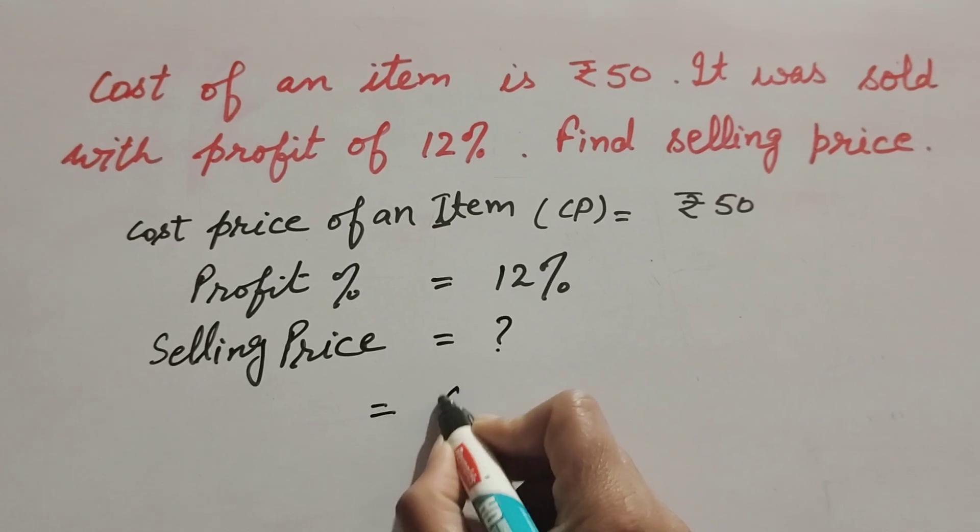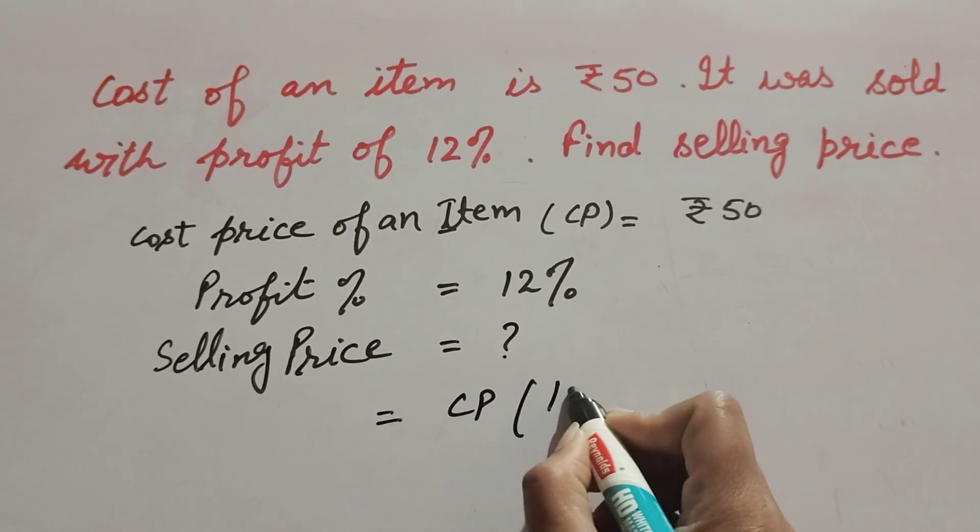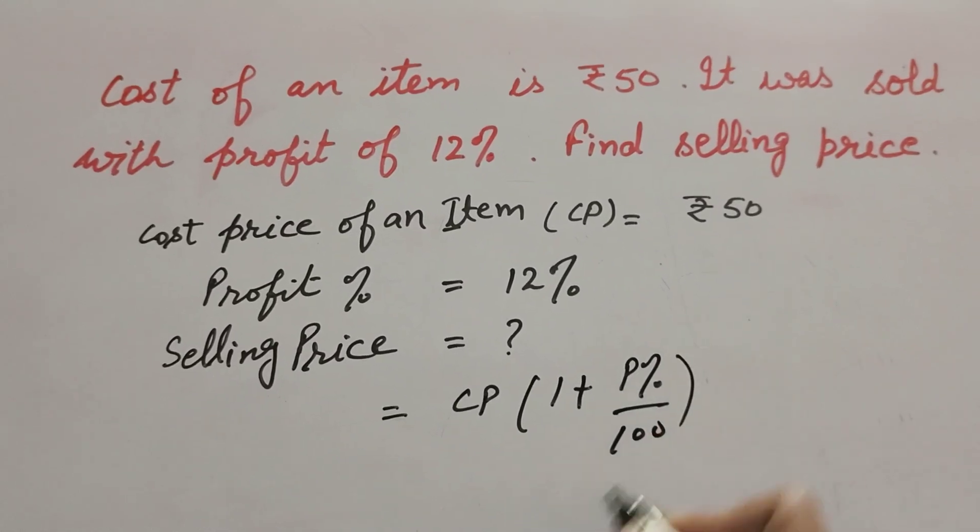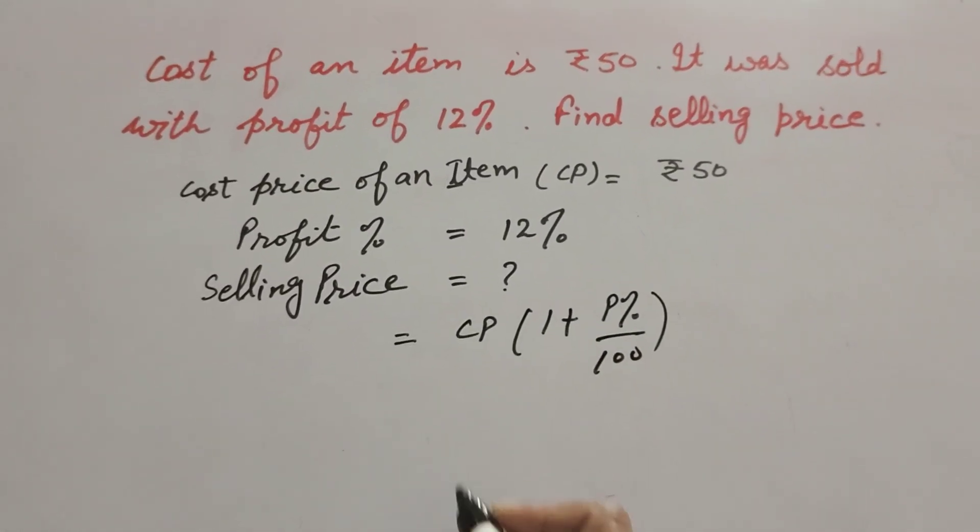Selling price is equal to CP × (1 + profit percentage/100).